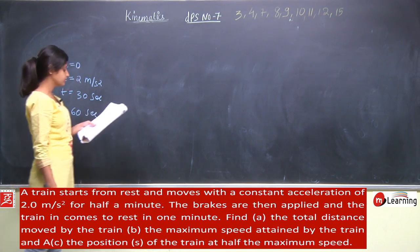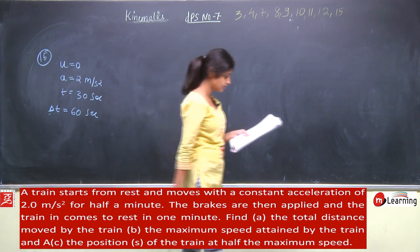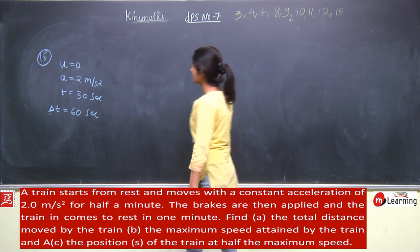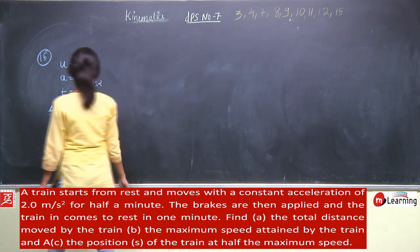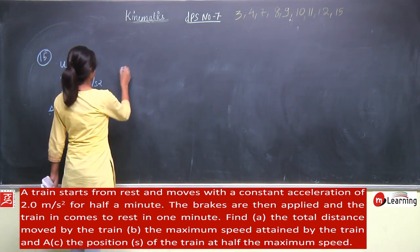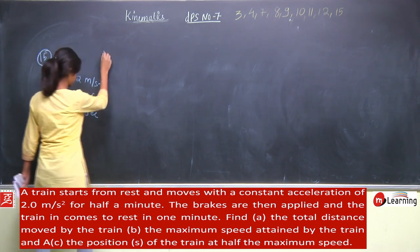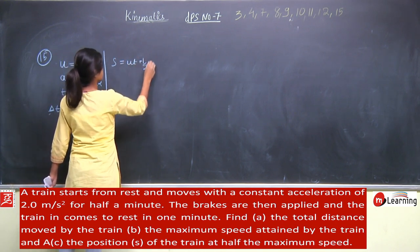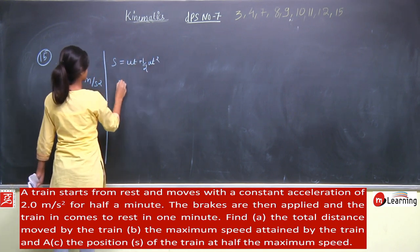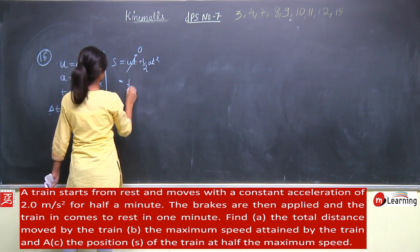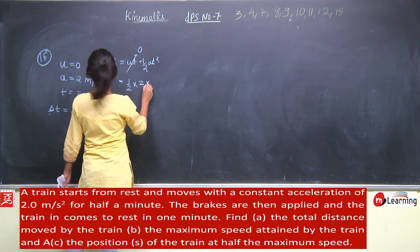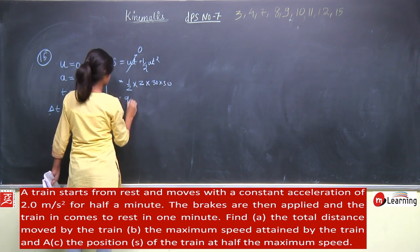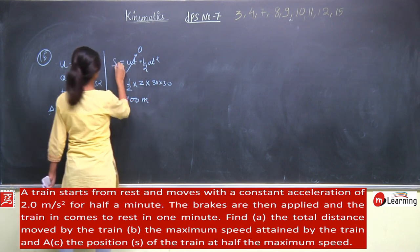Also find the maximum speed attained and the position of the train at half the maximum speed. For total distance, first the train accelerates: s equals ut plus half a t squared. u is 0, so distance is half into 2 into 30 squared, giving 900 meter. So S1 is 900 meter.